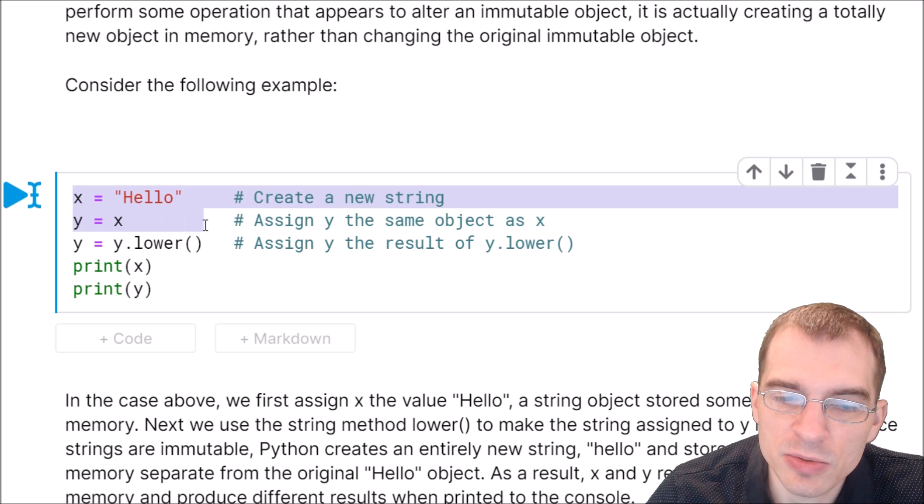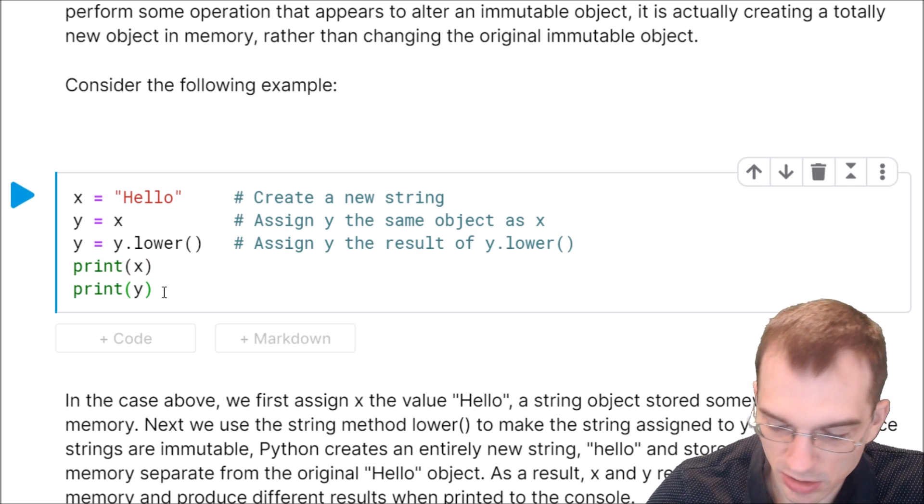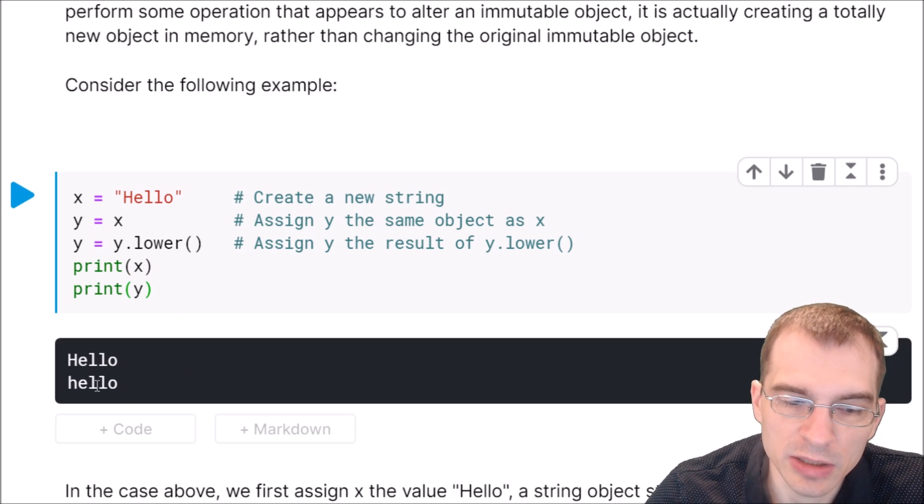So after running these three lines, when we print these to the screen, x and y are going to be referring to two different objects now. x is referring to the original hello with a capital H here, and y is now referring to a new string where the h has been turned lowercase. Let's just print that to confirm that that is true.